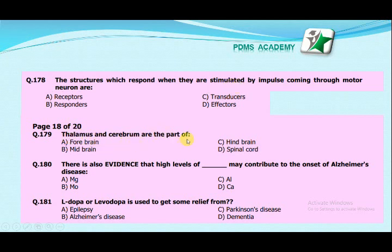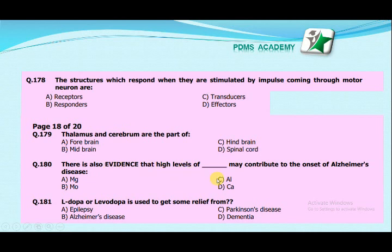The structures which respond when stimulated by impulses coming through motor neurons are: receptors, responders, transducers, or effectors? The correct answer is effectors, because effectors are the structures that respond to stimuli. Thalamus and cerebrum are parts of: forebrain, midbrain, hindbrain, or spinal cord? The correct answer is forebrain. There is also evidence that high levels of aluminum may contribute to the onset of Alzheimer's disease.